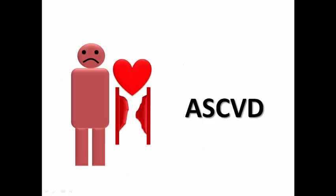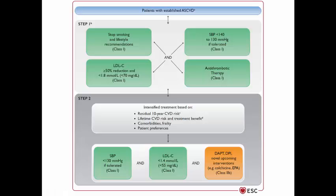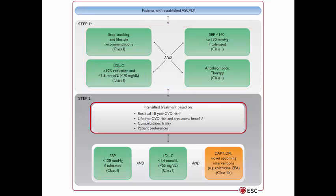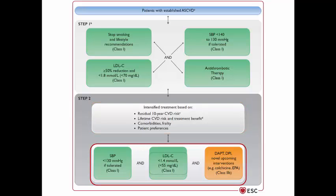What if the patient has atherosclerotic cardiovascular disease? In this diagram for patients with established cardiovascular disease, we have two steps. In step 1, the LDL goal is 50% reduction from baseline and less than 70 mg/dL. In step 2, treatment is intensified to a lower level of less than 55 mg/dL. Sometimes in very high-risk patients, such as those with acute or recent cardiovascular events, we can go directly to step 2.